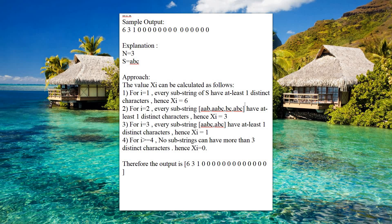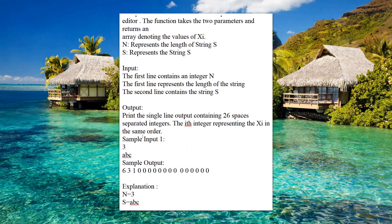For i equal to 2, substrings with at least 2 distinct characters are: ab, bc, ac, abc — giving xi equals 3. For i equal to 3, only 'abc' qualifies, so xi equals 1. For i greater than or equal to 4, no substrings can be formed, so xi equals 0. Therefore the output is: 6, 3, 1, followed by zeros for the remaining 23 positions up to 26. Thank you for watching; do subscribe for more updates.